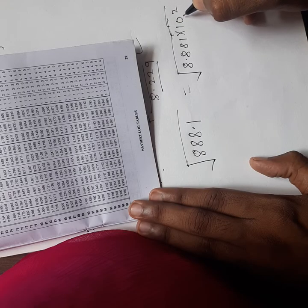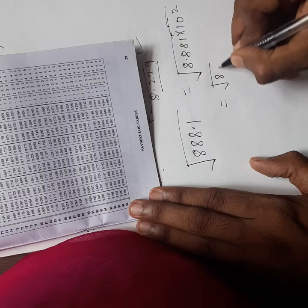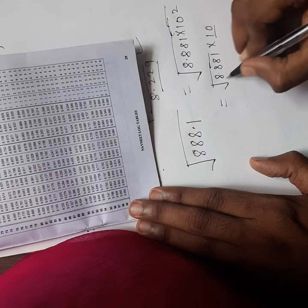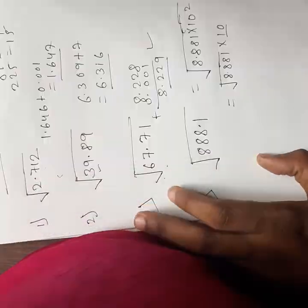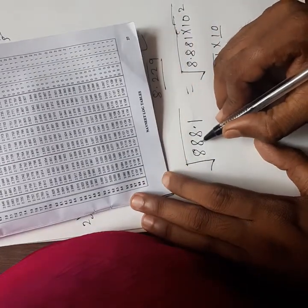We all know the square root of 100 is 10, so I can quickly take 10 out. This is done, only the 8.881 part is remaining. So I can go directly here back to find 8.88.